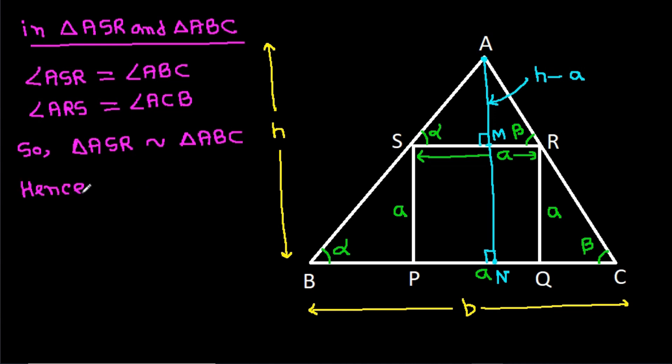Hence, ratio of base SR by BC will be equal to ratio of height AM by AN. And SR is a by BC is b. It is equal to AM is H minus a by AN is H.